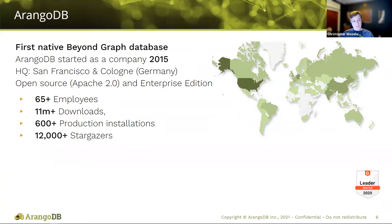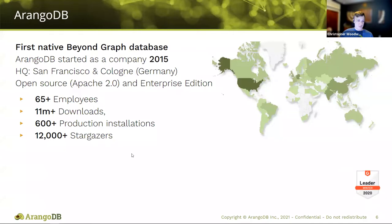We have well over 11 million downloads, 600-plus production installations that we know about, and we're very proud of our 12,000-plus stargazers on GitHub. We are an open source product built from the ground up with the community, and the community has been a large contributor to our success today. We actually have a lot of people who are now full-time employees that started out as community members, so we would love a star on GitHub.